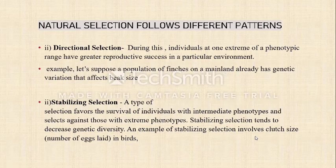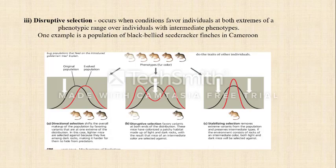An example is a population of finches on an island that already has genetic variation affecting beak size. A common reason for directional selection is that a population may be exposed to a prolonged change in environment. Next is stabilizing selection — a type of selection that favors the survival of individuals with intermediate phenotypes and selects against those with extreme phenotypes; stabilizing selection tends to decrease genetic diversity. An example is clutch size in birds.